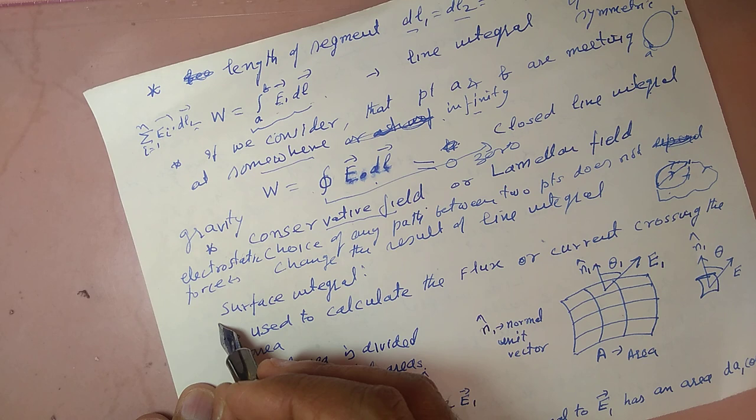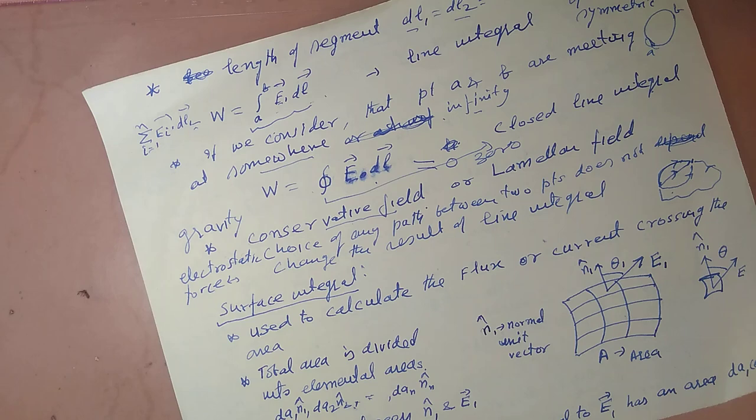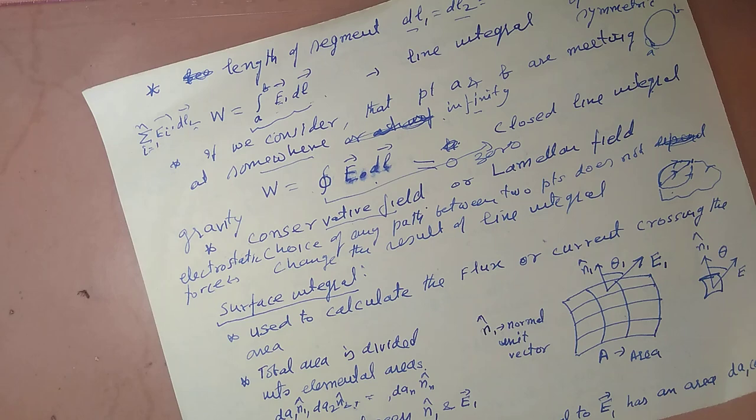Similarly, we can talk about another integral used in electromagnetics — that is the surface integral. In electromagnetics, we denote it with a double distorted S symbol.